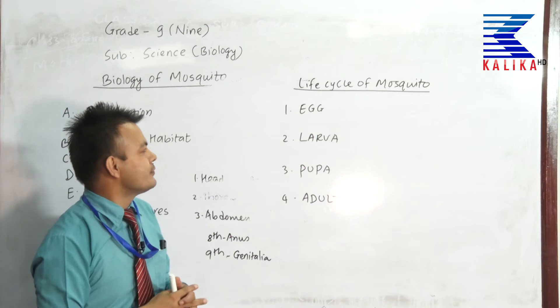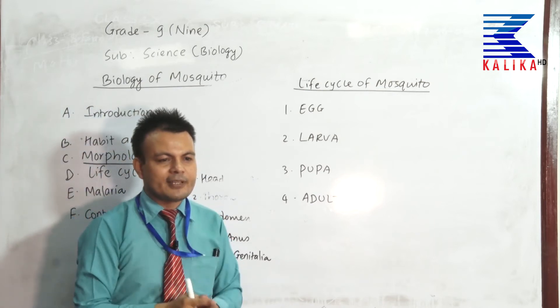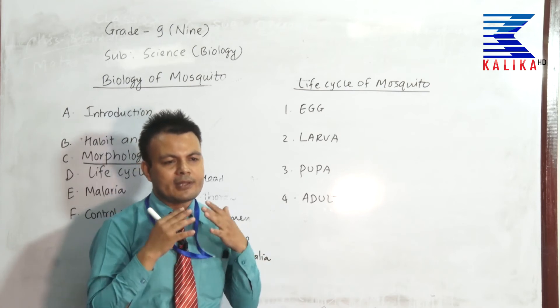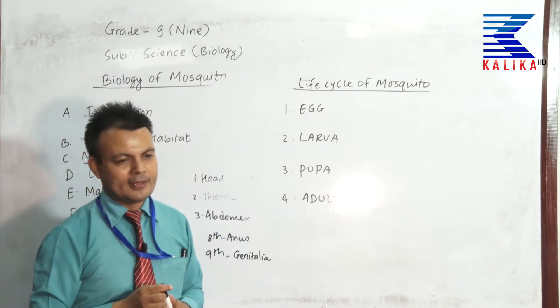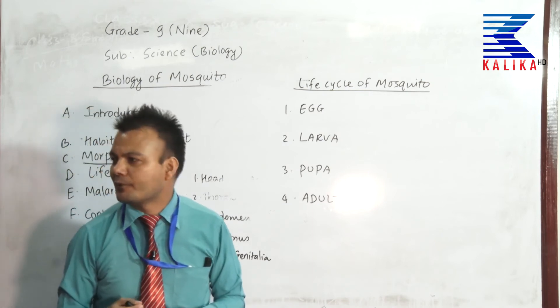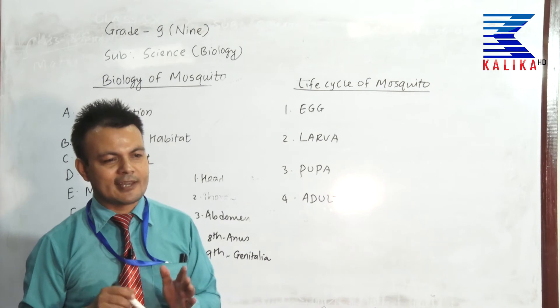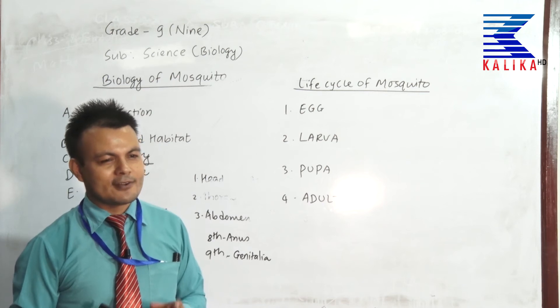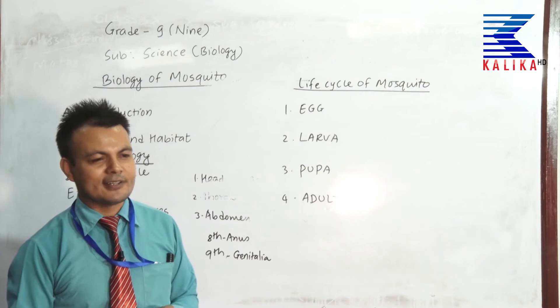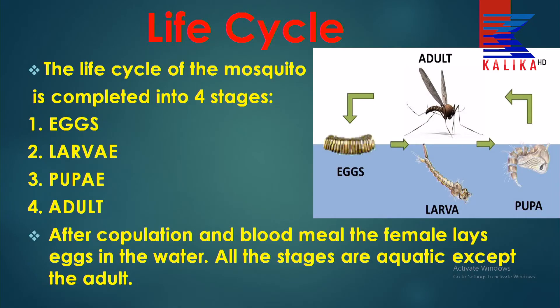When the female emerges from the puparium and becomes an adult, it flies and mates with males in the air. Then she finds a blood meal from animal or human being, and the female mosquito lays the eggs in water. The life cycle of mosquito shows complete metamorphosis with four stages. Eggs get hatched into larva, and the larva are voracious feeders. The larva of the mosquito are called wrigglers because they show a wriggling motion — just like a dancing motion.